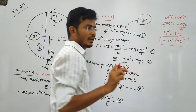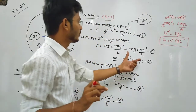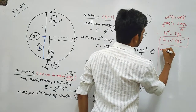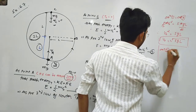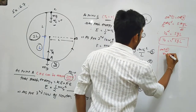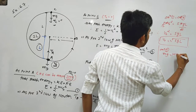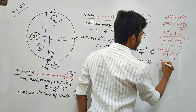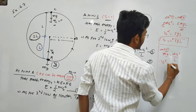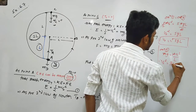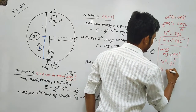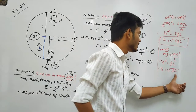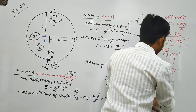Using equation number 4: mg equals m Vc² divided by L. The mass m cancels out, giving Vc² equals gL. Therefore Vc equals the square root of gL. This is our value for the speed at point C.